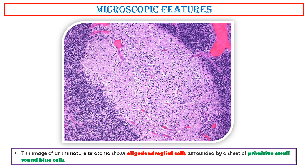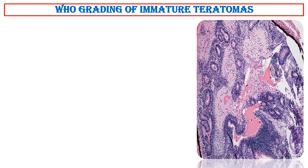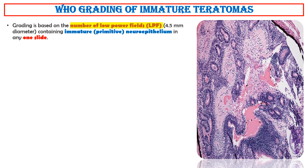This image of an immature teratoma shows oligodendroglial cells surrounded by a sheet of primitive, small, round, blue cells. WHO grading of immature teratomas. Grading is based on the number of low-power fields (LPF), 4.5 mm diameter, containing immature primitive neuroepithelium in any one slide. The same method is applied to metastatic foci.